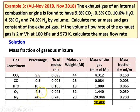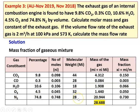The number of moles, dividing by 100, gives: 0.098, 0.003, 0.106, 0.045, 0.748. The molecular weights of the gas constituents: CO2 is 44, CO is 28, H2O is 18, O2 is 32, and N2 is 28.